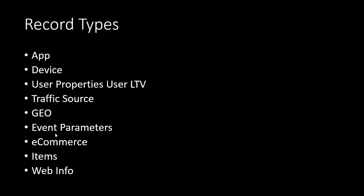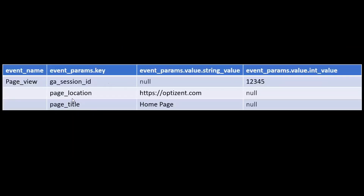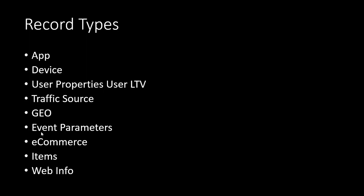Of those record types, only User Properties and Event Parameters are in a format where one record contains multiple values. The rest are split into different columns, which makes it easier for you to query them. When you send GA4 data to BigQuery, it's a very simple, one-table structure. You can augment that by putting in additional tables — third-party tables, your own CRM data, et cetera.